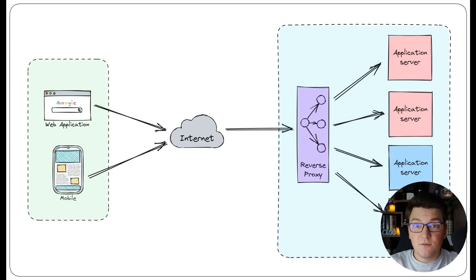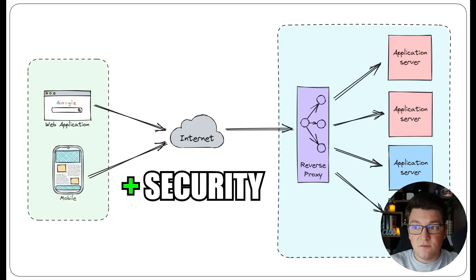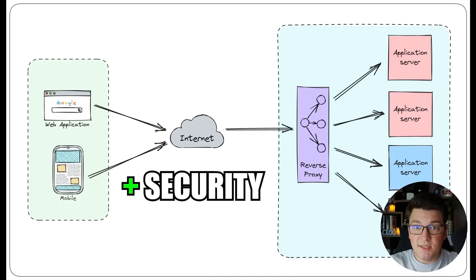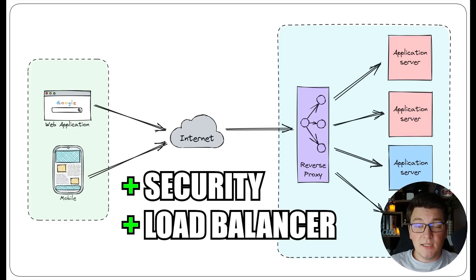The benefit of this is increased security because your application servers can now live in a private network and the only server that is exposed is the reverse proxy. Another common use case for a reverse proxy is as a load balancer where you have multiple running instances of the same application and the reverse proxy is responsible for distributing incoming requests between the application servers. So this is what we're going to be implementing in today's video.